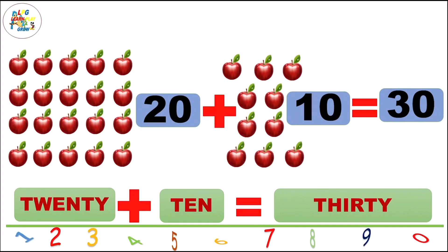20 plus 10 is equal to 30. 3, 0, 30. Now, we learn the spelling of 30: T-H-I-R-T-Y, thirty. Once again: T-H-I-R-T-Y, thirty. Once again: T-H-I-R-T-Y, thirty.